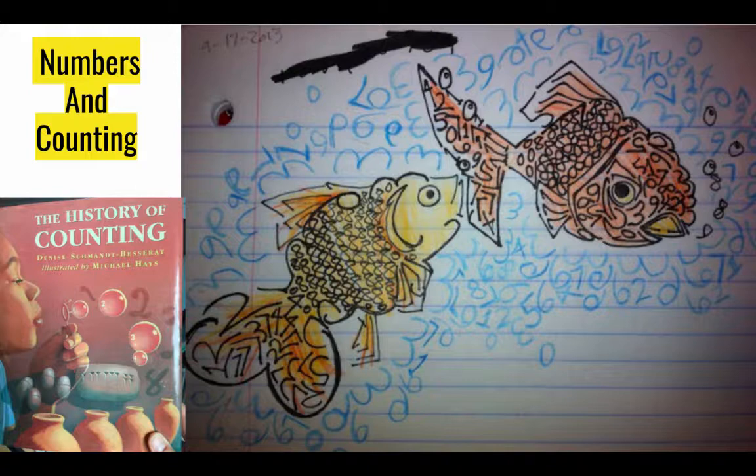I start with numbers and counting, kind of where it all began, the counting systems across cultures. We looked into the history of zero. We discussed what if there were no numbers, and this art piece was where students had to use all ten of the Hindu-Arabic numerals. You can see the water, the fish, even the bubbles are numbers. That book on the bottom left is called The History of Counting.